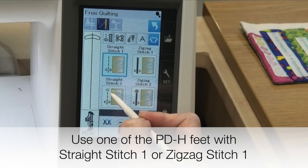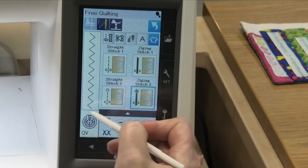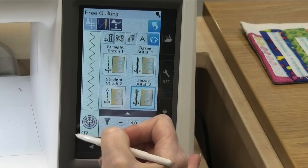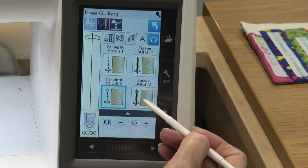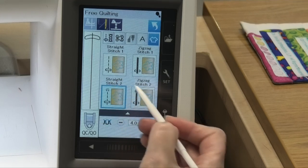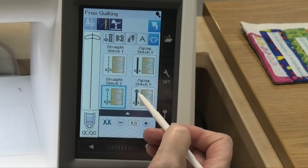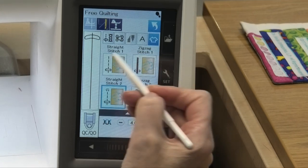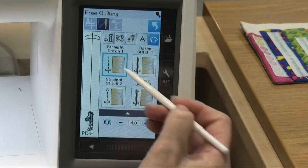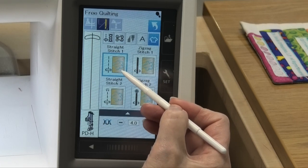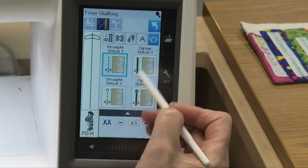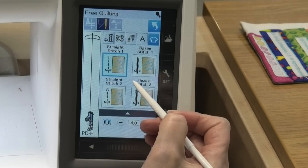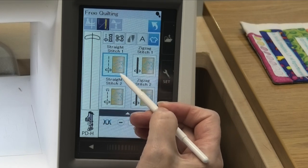If you want to use straight stitch two or zigzag two you can and you'll notice as I'm clicking on them the machine is suggesting to me which feet to use. We've already talked about those feet previously but the straight stitch two and zigzag stitch two are for flatter quilt sandwiches. So as I say most of the time you're going to be working up probably in the straight stitch one for the most part but I also want to show you a bit of a difference here between the one stitches and the two stitches. You may not have noticed as I've toggled back and forth but I'm going to point it out to you now.